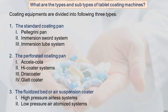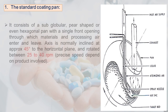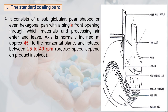The standard coating pan consists of a sub-globular, pear-shaped, or even hexagonal pan with a single front opening through which the material and processing air enter and leave. It can be sub-globular, pear-shaped, or hexagonal, with a single opening for both heated air and material.